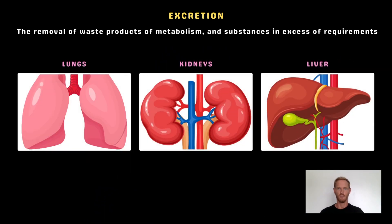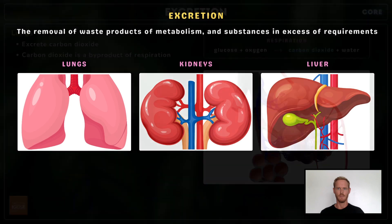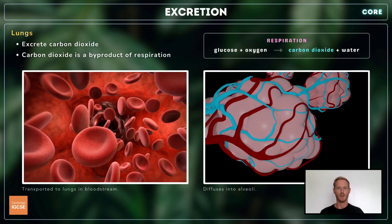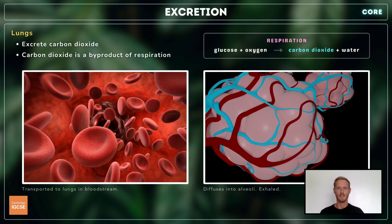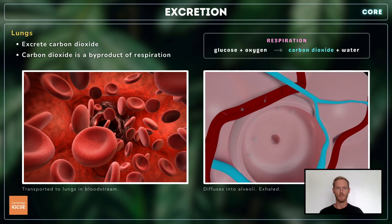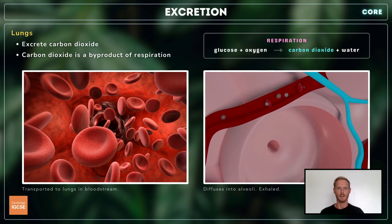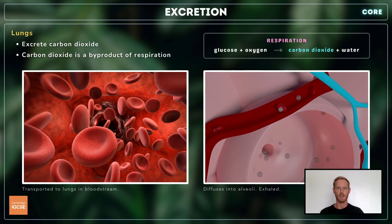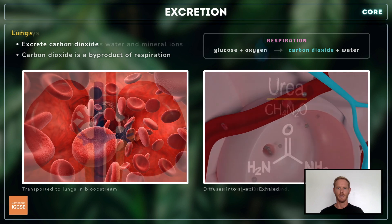Some of the organs involved in excretion are the lungs, kidneys and liver. The lungs are responsible for excreting carbon dioxide, a by-product of respiration. Carbon dioxide is transported in the bloodstream from the respiring tissues to the capillaries in the lungs, and it then diffuses into the alveoli so that it can be exhaled.